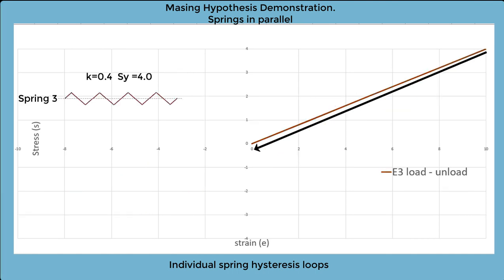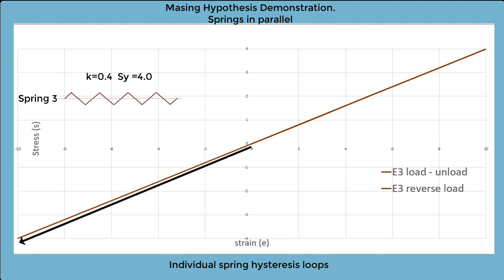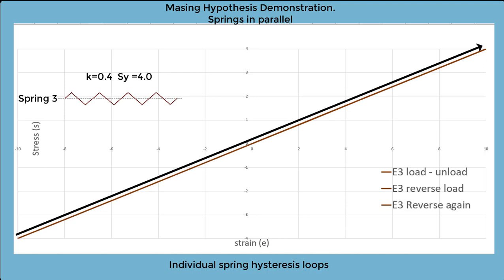Now we repeat the exercise for spring 3, but this remains elastic throughout the cycle, because we don't reach the yield level of 4 units.